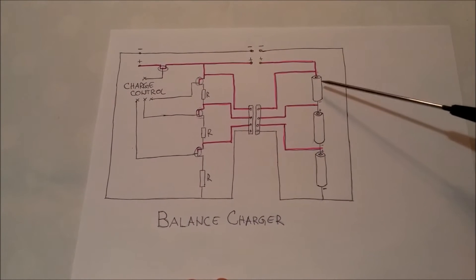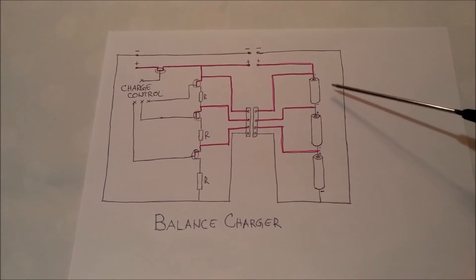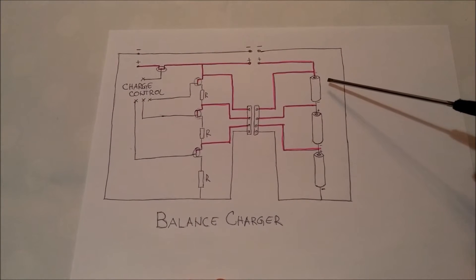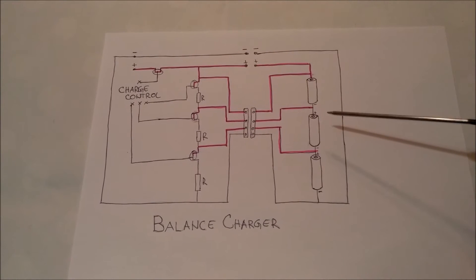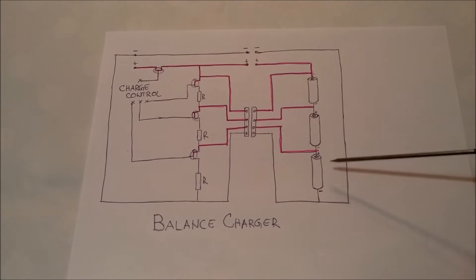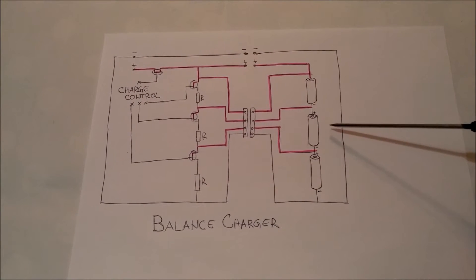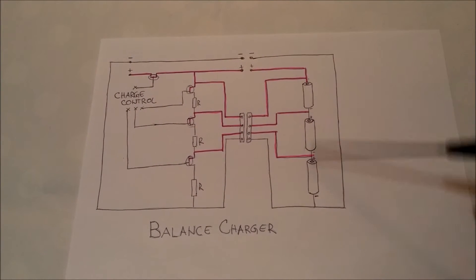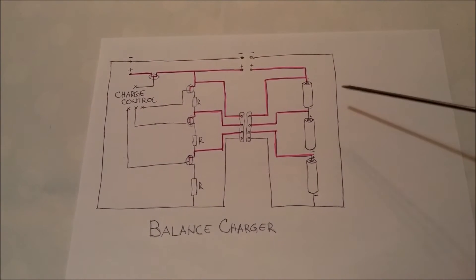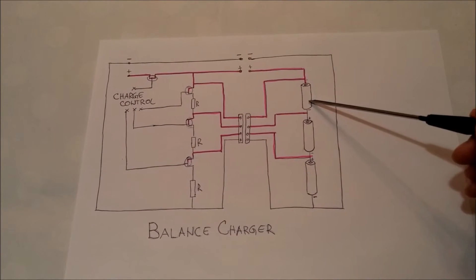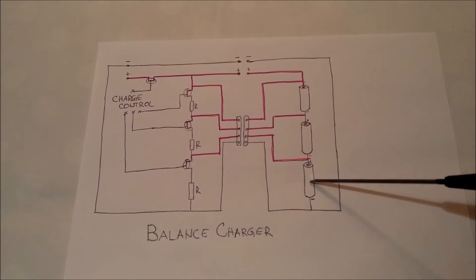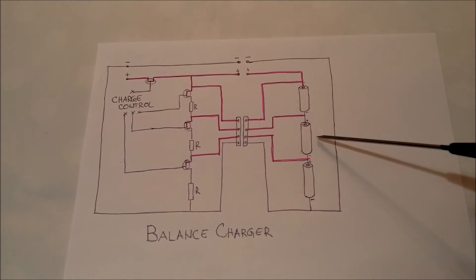For example, the first battery gets charged at 4.2 volts, and the second and third batteries are charged with 4.0 volts. In the next few minutes of charging, this battery will get to 4.3 volts and the second and third to 4.1 volts.